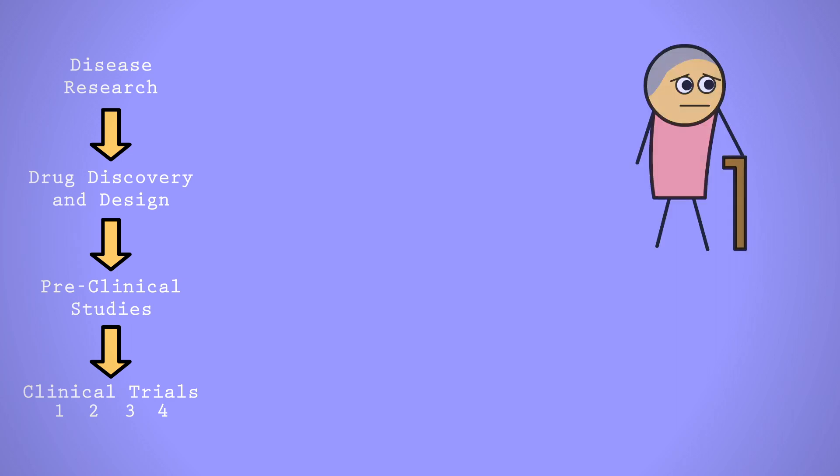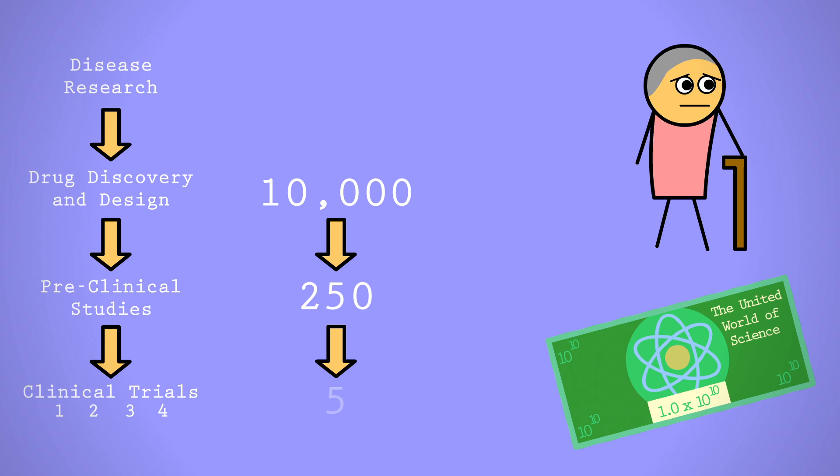The entire process can take upwards of 15 years and billions of dollars. Not to mention, for every one new drug, we likely started with tens of thousands of compounds in the drug discovery process. And before we could even start designing the drug, we had to understand the disease first. But despite our best understanding of pathology and drug design, this process can fizzle out at any stage.